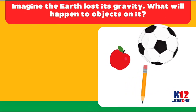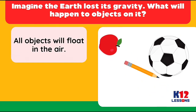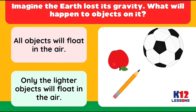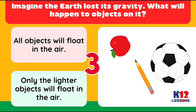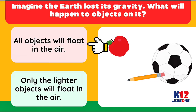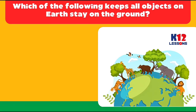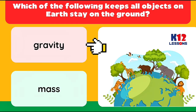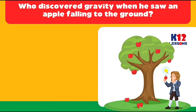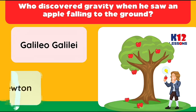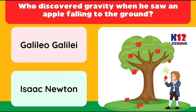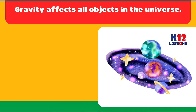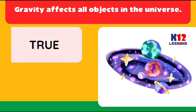Imagine the Earth lost its gravity — what would happen to objects? All objects will float in the air. Which of the following keeps all objects on Earth on the ground? Gravity. Who discovered gravity when he saw an apple falling to the ground? Isaac Newton. Gravity affects all objects in the universe — True.